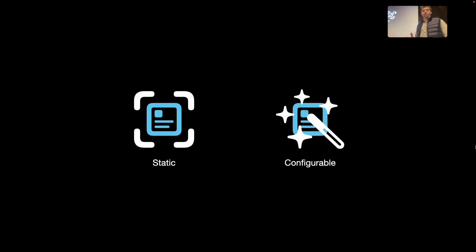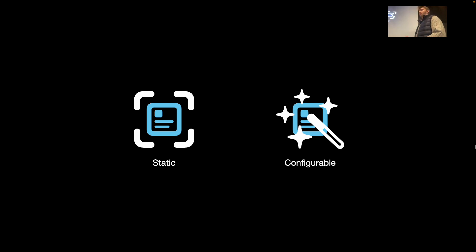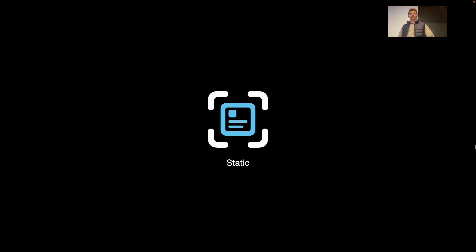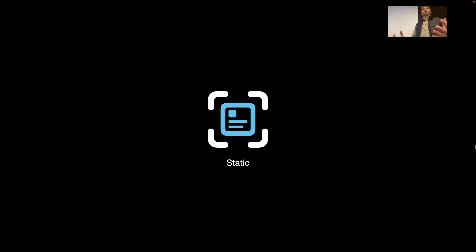We can have two kinds of widget variations: a static widget or a configurable widget. A static widget only shows you information, while a configurable widget is one where you can actually input data. I'm going to show you first how to create a static widget using dummy weather data, and then if we have time, we'll make it configurable where you can put in a location and view the actual weather.